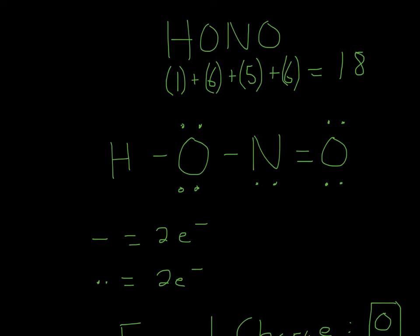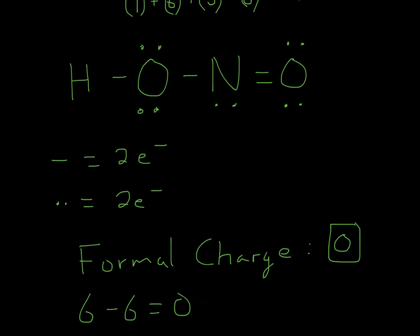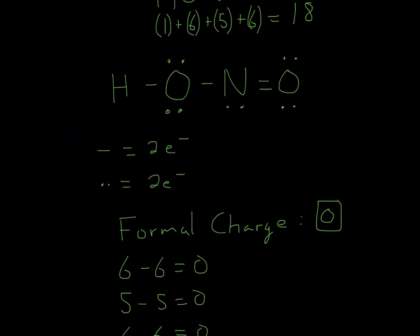Now let's look closer at formal charge. So let's look at the oxygen first. How we count formal charge is count the dashes as 1 and each of the electrons in the lone pair as 1. So 1, 2, 3, 4, 5, 6. So 6 minus the group number that oxygen is in, and the group number is 6, so 6 minus 6 is 0.